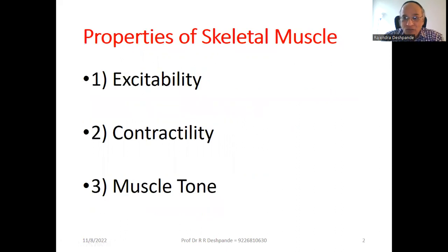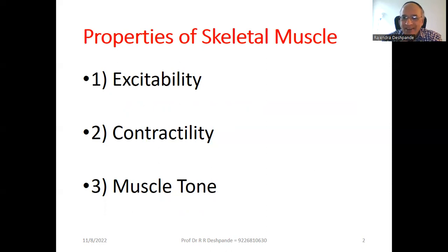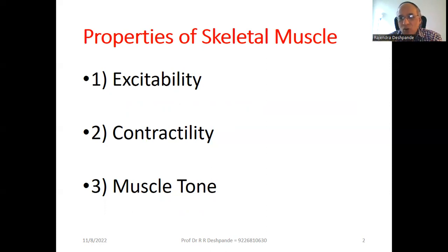As you know, there are 3 types of muscle. One is skeletal muscle, related with your hands and legs, also called striated muscle. Then there is cardiac muscle, related with your heart. The third category is visceral muscle — the muscles related with your stomach, small intestine, and large intestine. Today we are going to talk about the properties of only skeletal muscle, though many properties are similar across all categories.